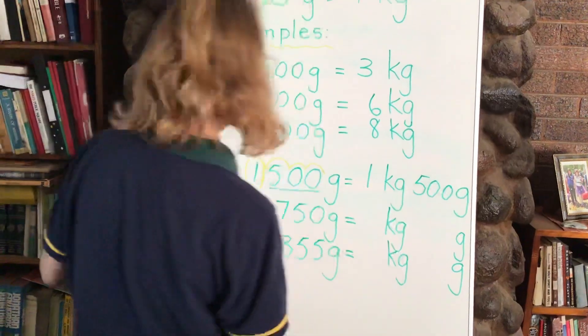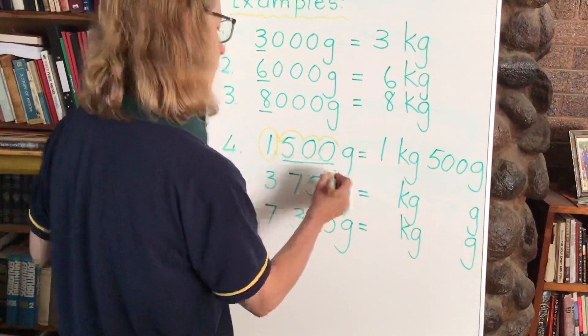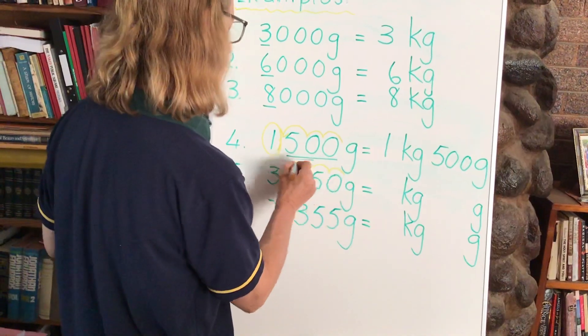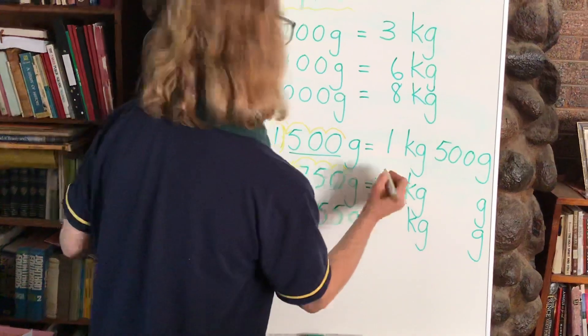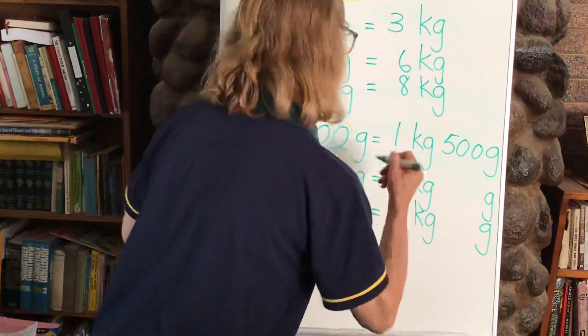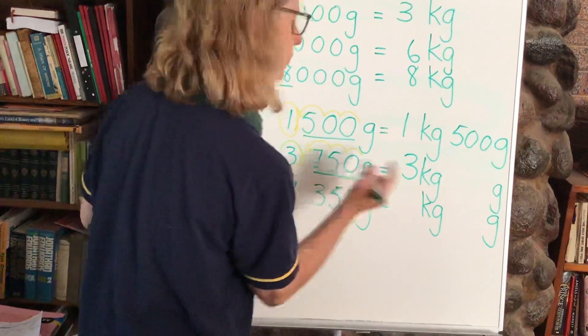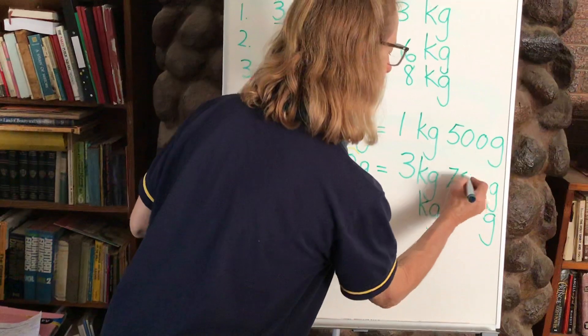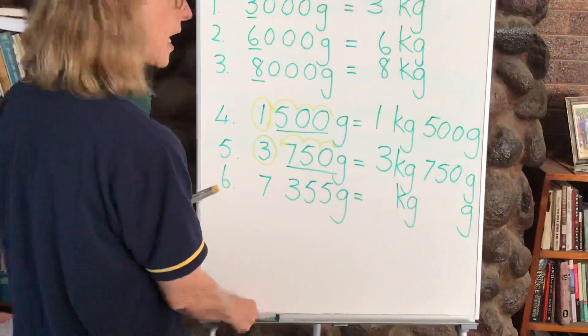And then number 5. So the same thing, let's do the same thing. We're going to count 1, 2, 3 places and then we know after that we've got our kilograms. So we write in our kilograms here, 3 kilograms. And how many grams are left over? 750. And we simply write it like that, 750 grams left over and we write it like that.